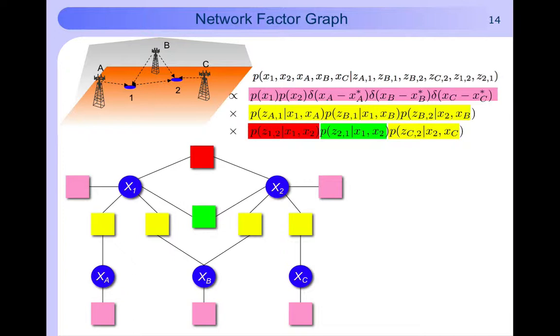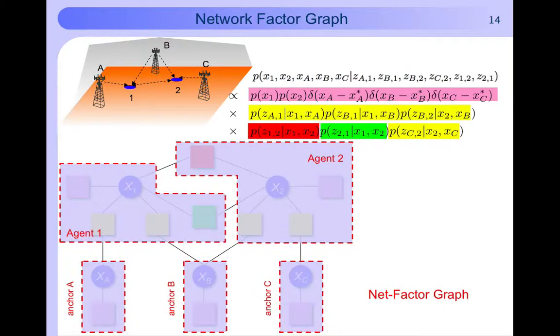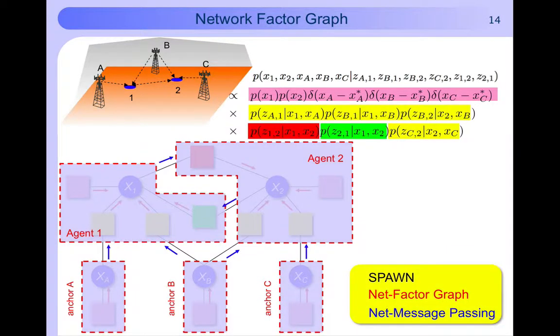However we would like the network to perform the sum product algorithm. To that end we map the factor graph onto the network as follows. With every device we associate a subgraph and the factor graph. Every subgraph is a tree and subgraphs are non-overlapping. This implies that messages are either within a subgraph, that means within a node, or between subgraphs, between nodes. The latter types of messages are sent as packets over the air interface. The resulting algorithm we call SPAWN.